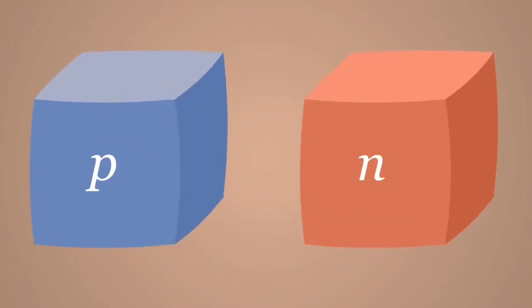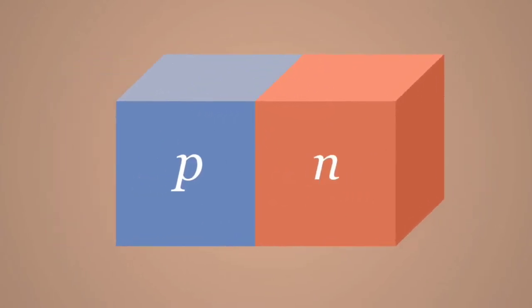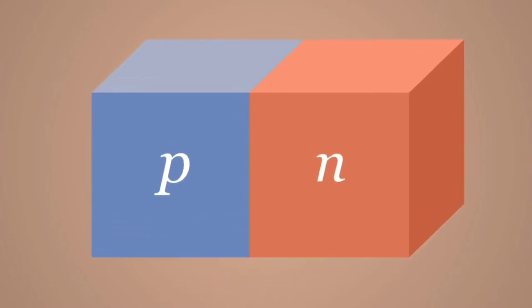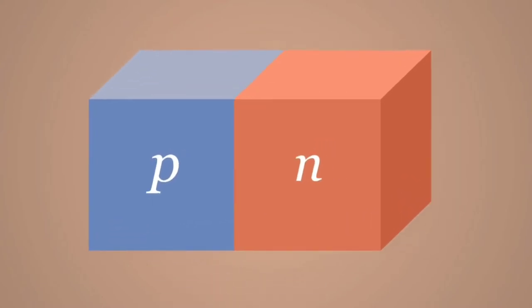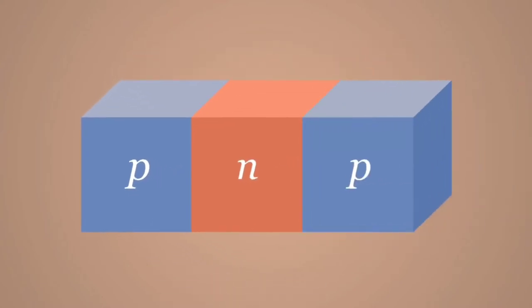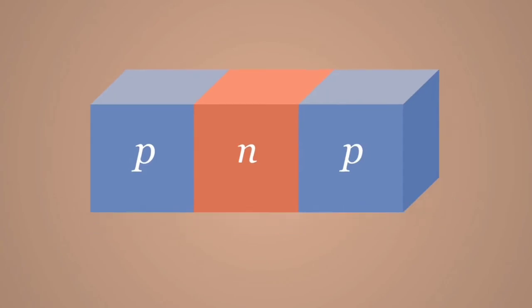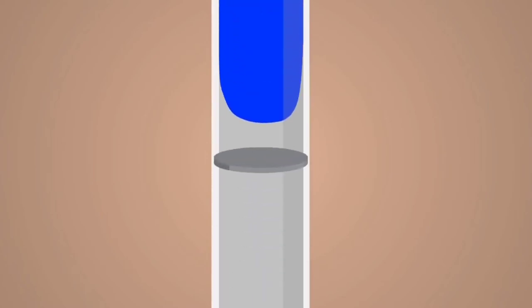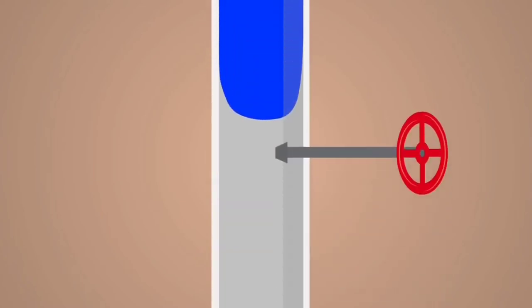When a P-type and an N-type semiconductor are sandwiched together, what is formed is a diode. However, when an N-type semiconductor is sandwiched between two P-type semiconductors, or vice versa, a transistor is formed. A diode is like a pipe through which a current of water can flow in only a single direction. A transistor, however, is like a valve — it allows us to control the current flowing through this pipe by rotating it.